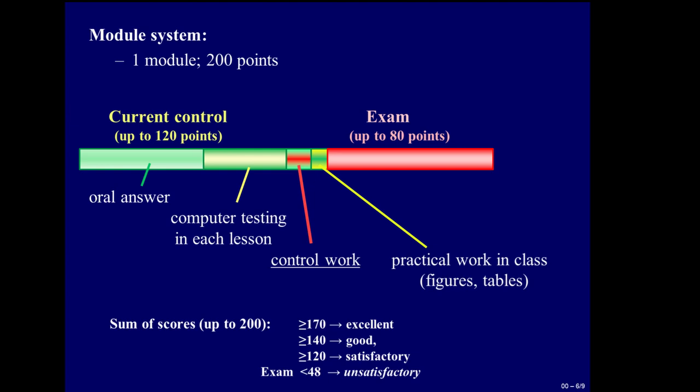And then 80 points in exam. Total score is sum of practical classes score and exam. Total is up to 200 points. If a student receives more than 170, he or she receives an excellent mark. More than 140 points, a good mark. If a student receives 120 points or more, his or her mark is satisfactory.